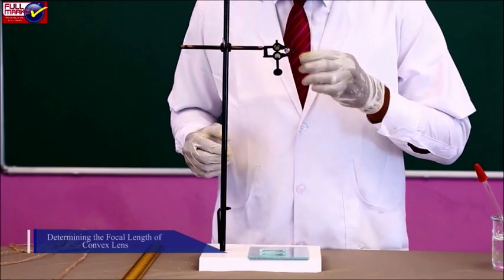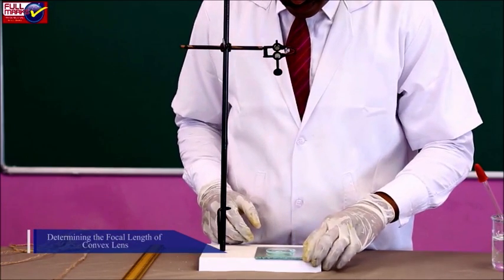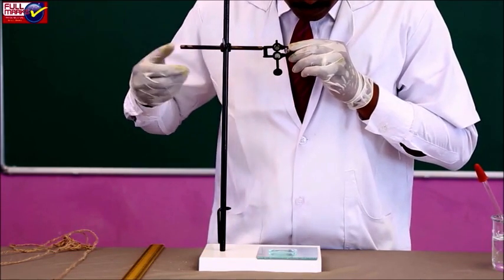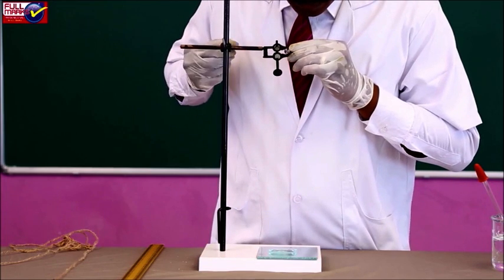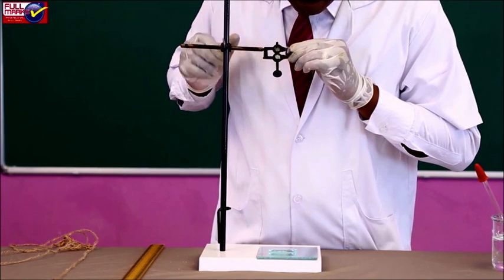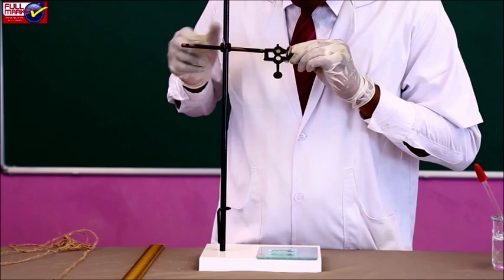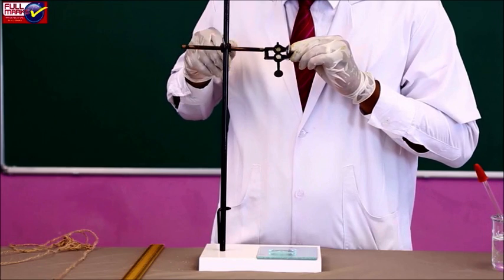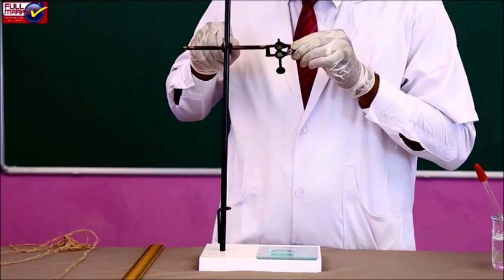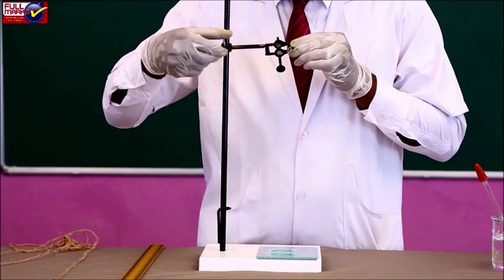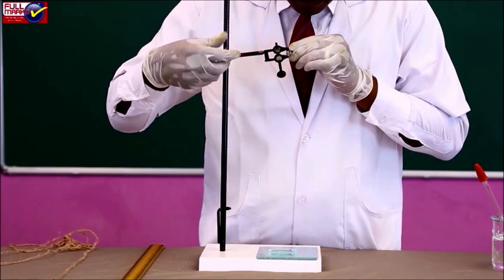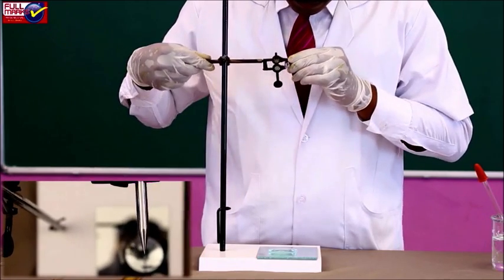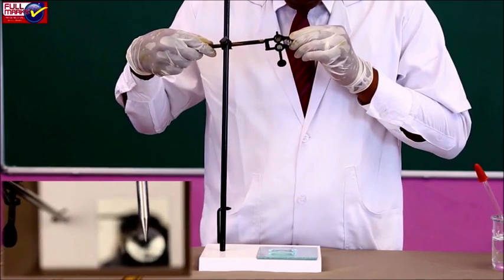Determining the focal length of convex lens: Place the plane mirror on the horizontal base of the iron stand and keep its reflecting surface upward. Keep the given convex lens on the plane mirror such that its principal axis is vertical. Fix an optical needle with the clamp of the iron stand so that the needle is in the horizontal position above the lens on its principal axis. Move the optical needle up and down so that the tip of its image coincides with the tip of the needle. Remove the parallax between the tips.